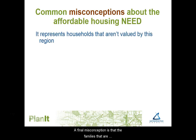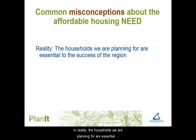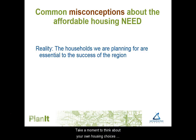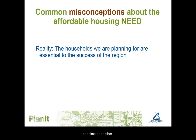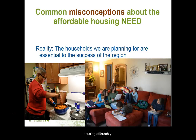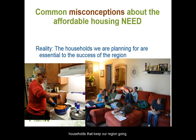A final misconception is that the families represented by these numbers are not valued by this region. In reality, the households we are planning for are essential to our success. A typical two-bedroom apartment in the region rents for about $1,100 per month, which requires an annual income over $44,000 to be affordable. Yet more than half the jobs in the region pay less than $44,000 per year. The challenge of finding affordable housing is something most people in the region have experienced. We all purchase goods and services provided by workers who don't earn enough to pay for market-rate housing affordably. To be a competitive region, we need a full range of housing choices that serves the needs of all the households that keep our region going.